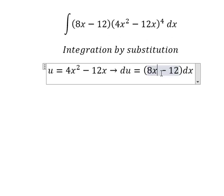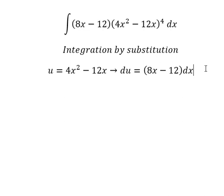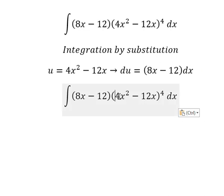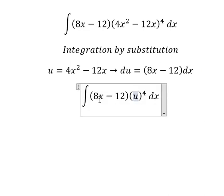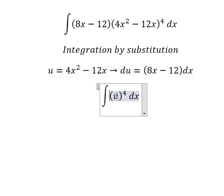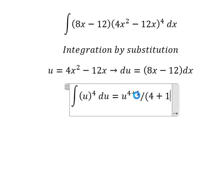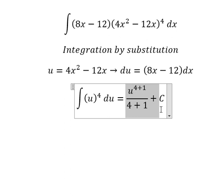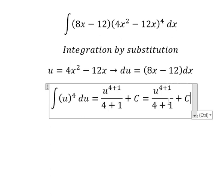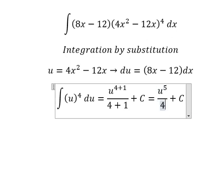So this one we change for u, 8x minus 12 dx we change for du. And now we have the final answer and this one we have four plus one, we have number five. The final answer is u to the fifth over five plus C.